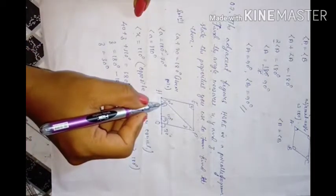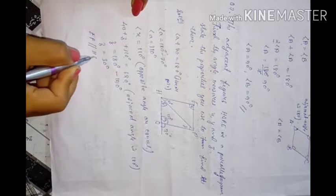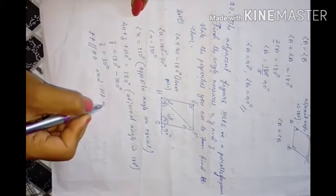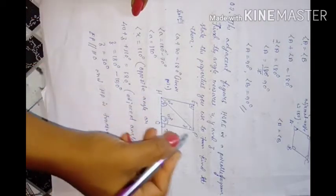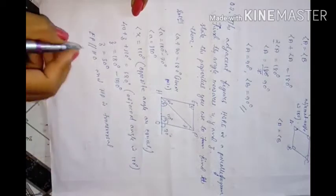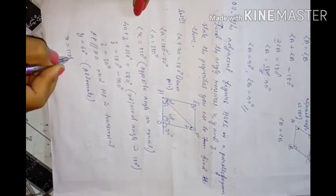EP is parallel to HO and HP is a transversal. So y equals 40 degrees by alternate angles. Final answers: x equals 110 degrees, y equals 40 degrees, and z equals 30 degrees.